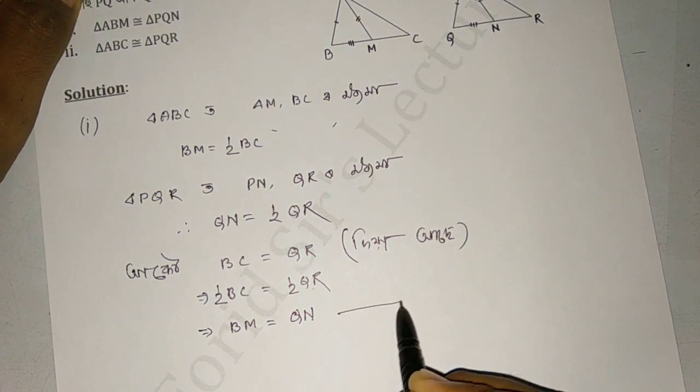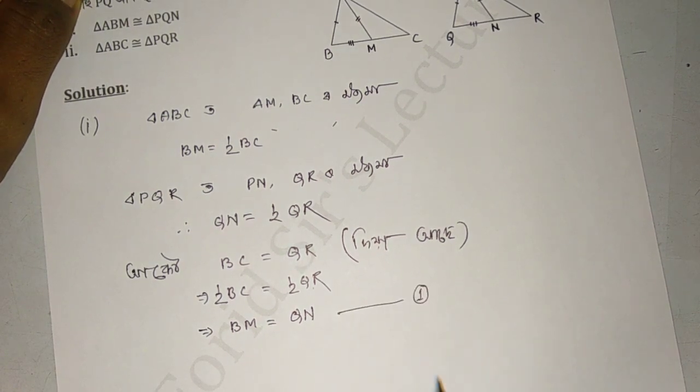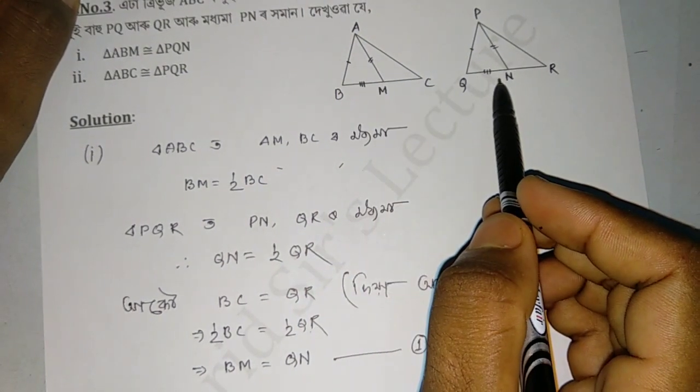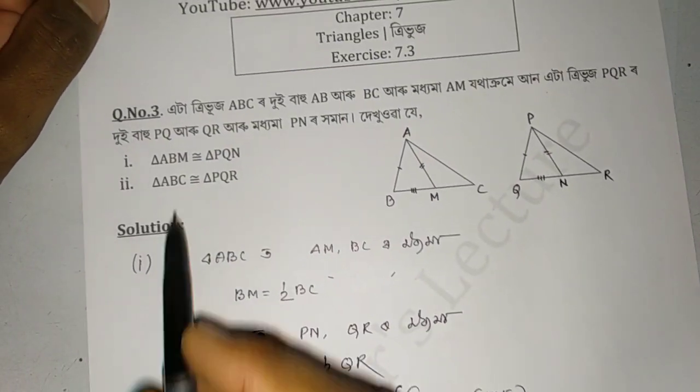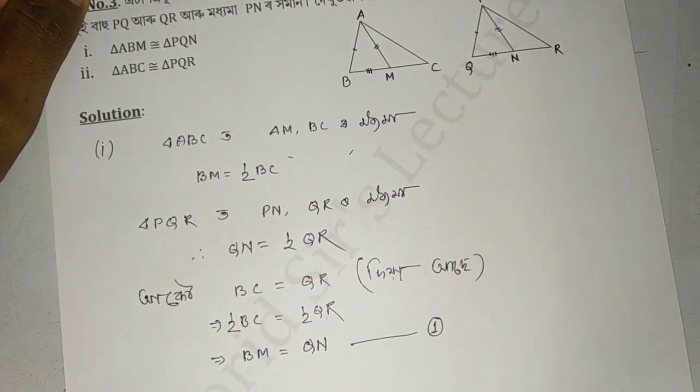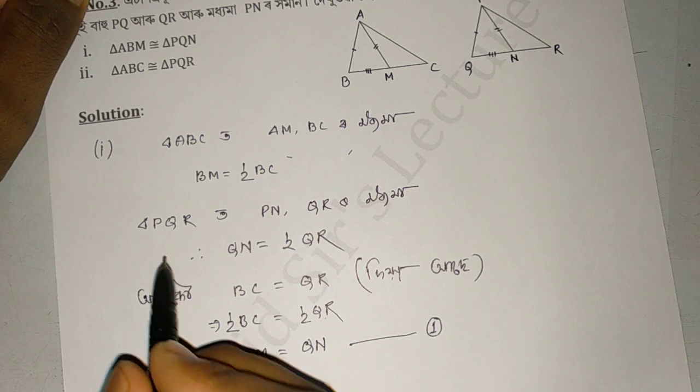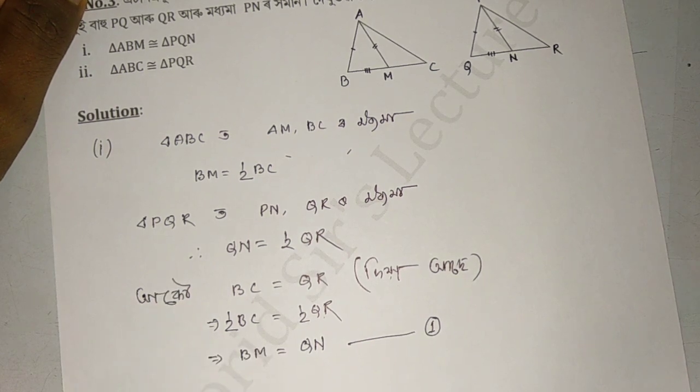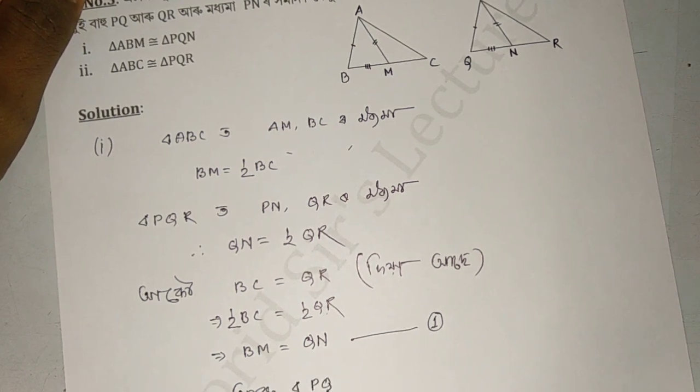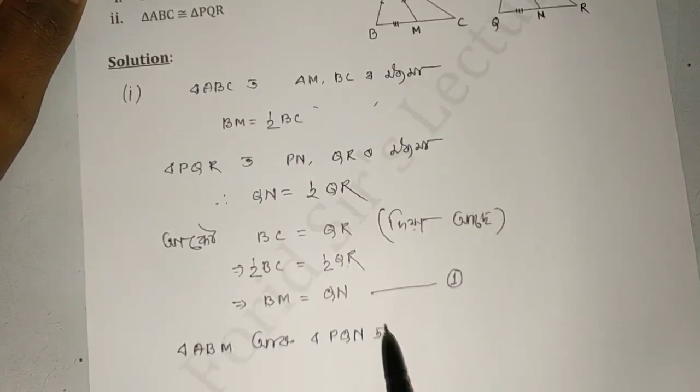Now looking at the data numbering with points B, M, Q, and N, I will show you triangle ABM corresponds to triangle PQN. These triangles are the same. We have triangle ABM and triangle PQN to consider.